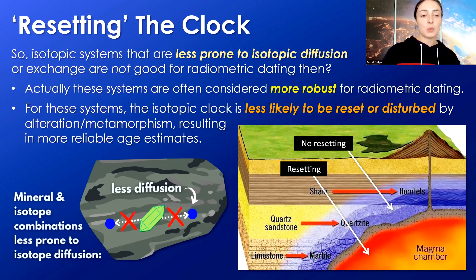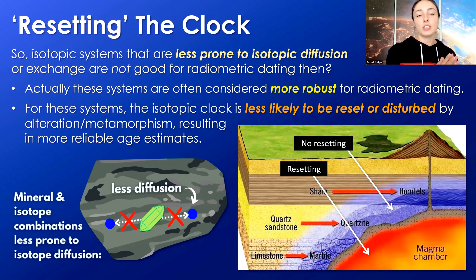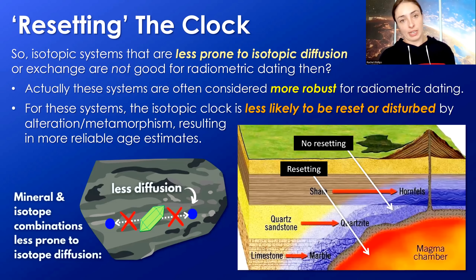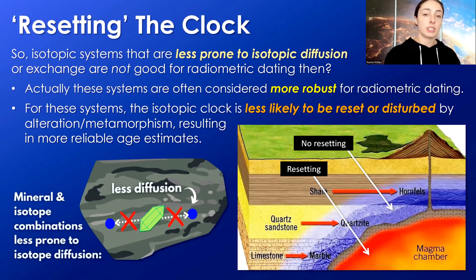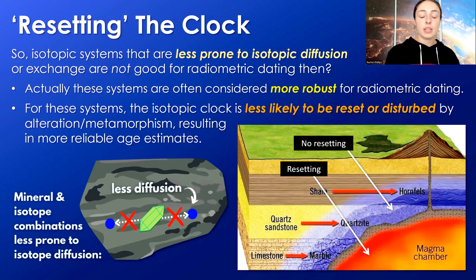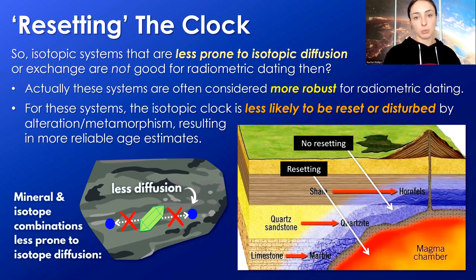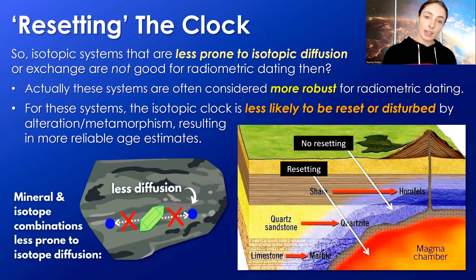Systems less prone to diffusion are actually considered more robust for radiometric dating, because the isotopic clock is less likely to be disturbed or reset during periods of alteration or metamorphism, resulting in more reliable original ages. So if you want to date a metamorphic rock and obtain the metamorphic age, you should pick an isotopic system prone to resetting. If you want to obtain the original age before metamorphism, you should pick one less prone to resetting.